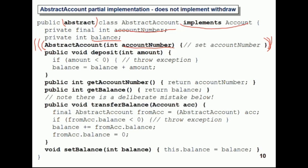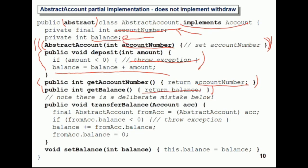This is the deposit method — it's very simple. It says if the amount to deposit is less than zero, somebody made an error, so throw an exception. Otherwise, the balance is equal to the current balance plus the amount to deposit. Another method is get account number — very simple, you're just returning the account number. Then get balance — again very simple, you're just returning the balance variable.